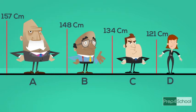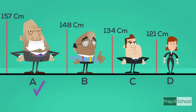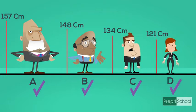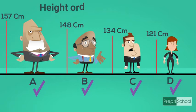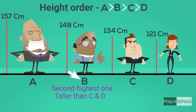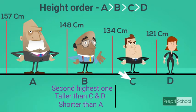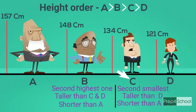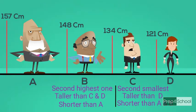Arranging them in height order: A is first, then B, then C and D. From this picture we can say that A is the tallest, or A is taller than B, C, and D. B is the second highest, taller than C and D but shorter than A. C is the second smallest, taller than D and shorter than both A and B. D is the smallest among all, shorter than A, B, and C.